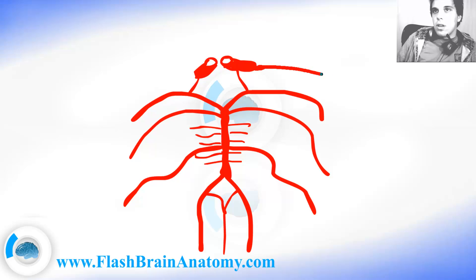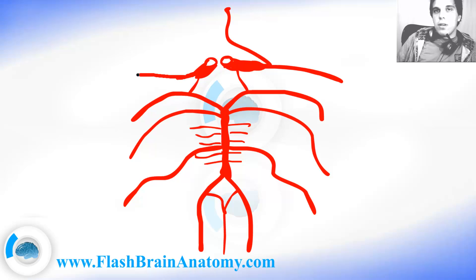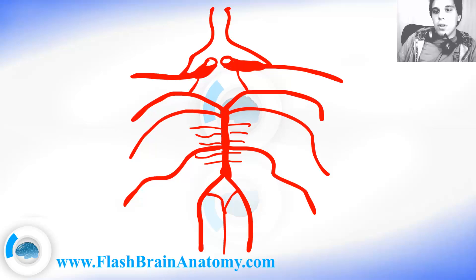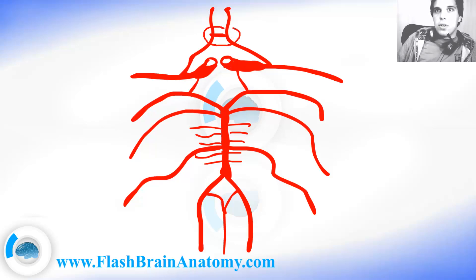Then the internal carotid artery separates into two arteries. One of these arteries is the middle cerebral artery — it goes this way and it supplies the lateral side of the brain. The other artery is the anterior cerebral artery. We have the same thing on the other side. The anterior cerebral arteries are usually connected with the anterior communicating artery. So remember, this was the posterior communicating artery and this is the anterior communicating artery.